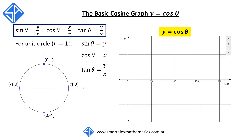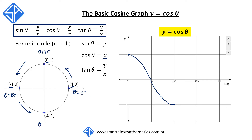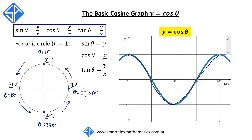The next graph is y equals cos theta. This time we track the x coordinate as the angle theta rotates through the circle. Starting at theta equal to zero degrees, the x coordinate is one. As theta moves from zero to 90 degrees, x goes from one to zero. From 90 to 180 degrees, x changes from zero to negative one. From 180 to 270 degrees, x goes from negative one back to zero. And completing the cycle from 270 to 360 degrees, x goes from zero back to one. We can keep repeating this pattern, giving us the graph of y equals cos theta.